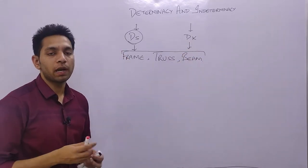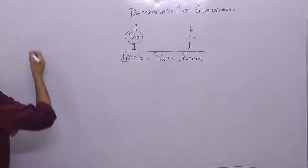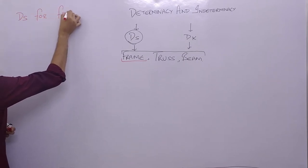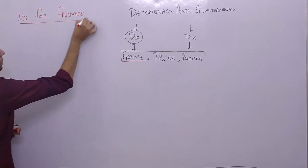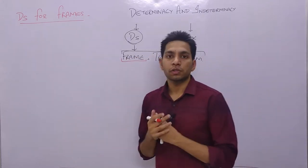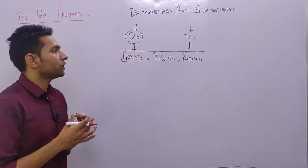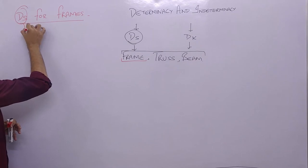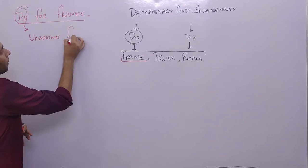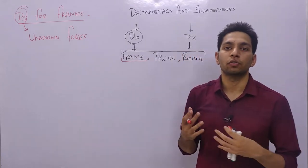Starting with questions on the degree of static indeterminacy for frames, the first question often asked is why we use static or kinematic indeterminacy. Static indeterminacy reflects on unknown forces, while kinematic indeterminacy reflects on unknown displacements or unknown slope and rotation.